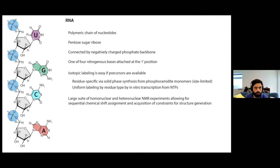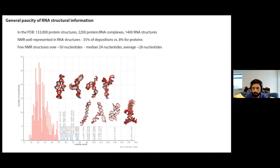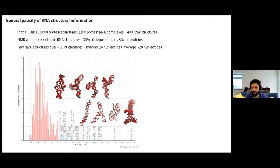There's a relatively well-developed suite of NMR experiments — heteronuclear and homonuclear — which allow for chemical shift assignment and acquisition of constraints for structure generation. But despite this, there's a lot less structural information available for RNAs than for proteins. Only about 1% of PDB depositions are RNA structures, even though the human genome codes for more functional RNAs than proteins. Of those structures in the PDB, NMR is relatively well represented, making up about a third of all depositions, but they're generally quite small. The median is 24 nucleotides, and there are sufficiently few over 50 nucleotides that I can list them all on this figure.